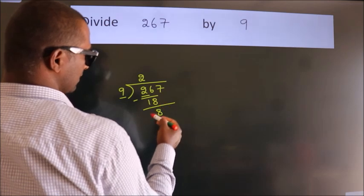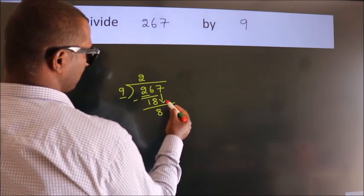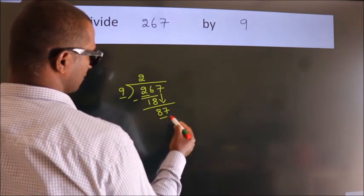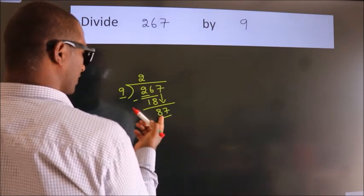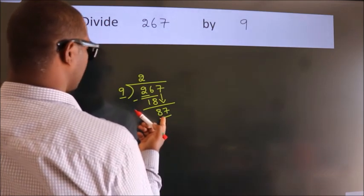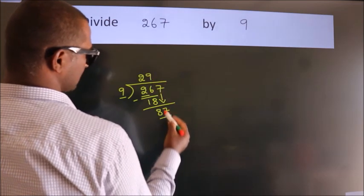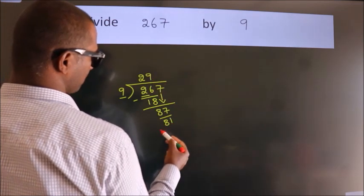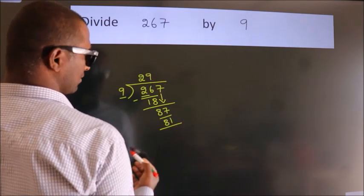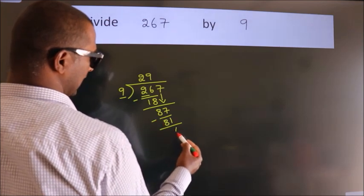After this, bring down the next number. So 7 down, making 87. A number close to 87 in the 9 times table is 9 nines, 81. Now we subtract and get 6.